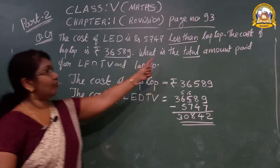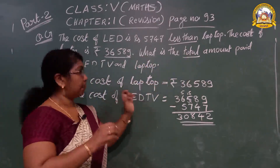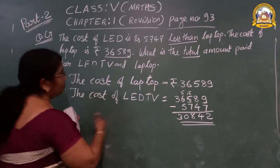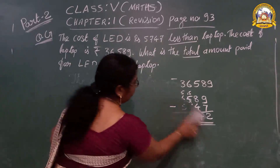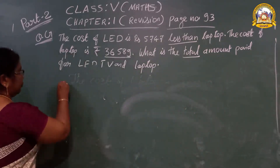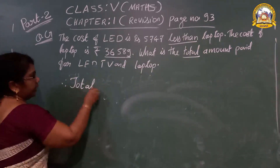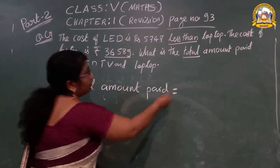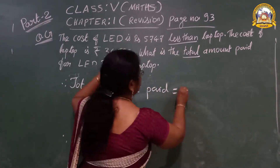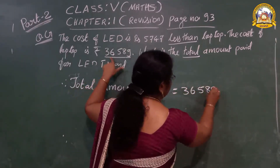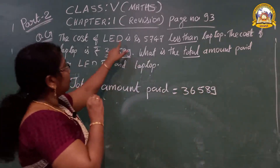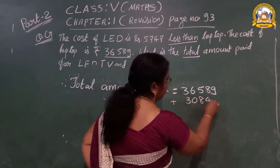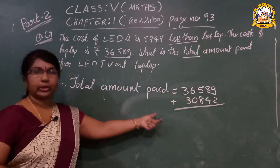Now our answer is not over. We then have to find the total amount. Total means you have to add. We have to find the total cost of both the laptop and the LED TV. What is the cost of the LED TV? We already done the subtraction. Do you remember the number? 30,842. The cost of the laptop is 36,589.